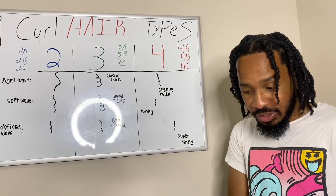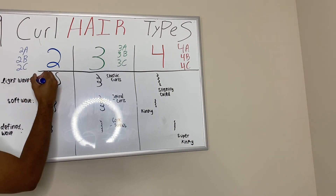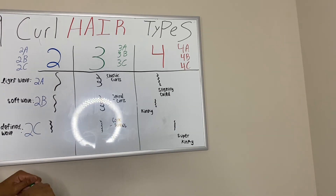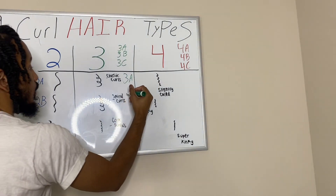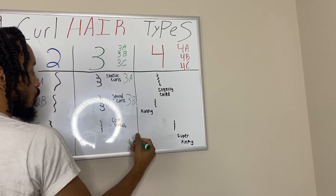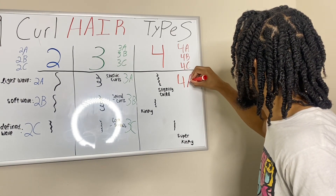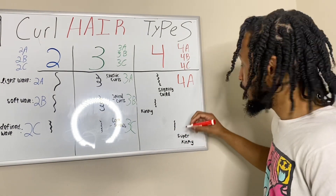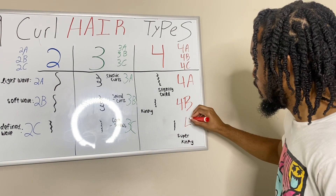I'm going to write down each one: light wave 2A, soft wave 2B, defined wave 2C, the classic curl 3A, the spiral curl 3B, corkscrew 3C, slightly coiled 4A, kinky coil 4B — and I am 4B — and super kinky 4C.